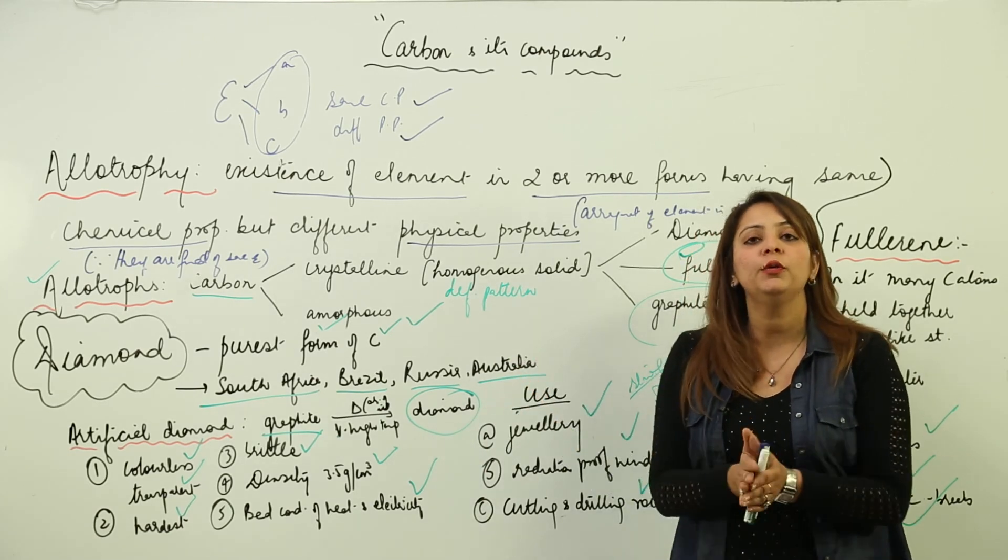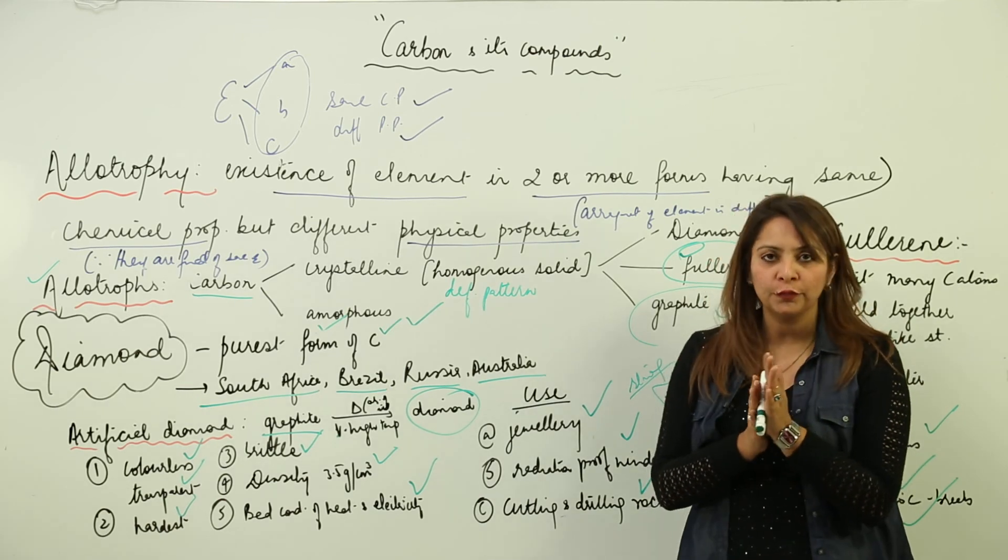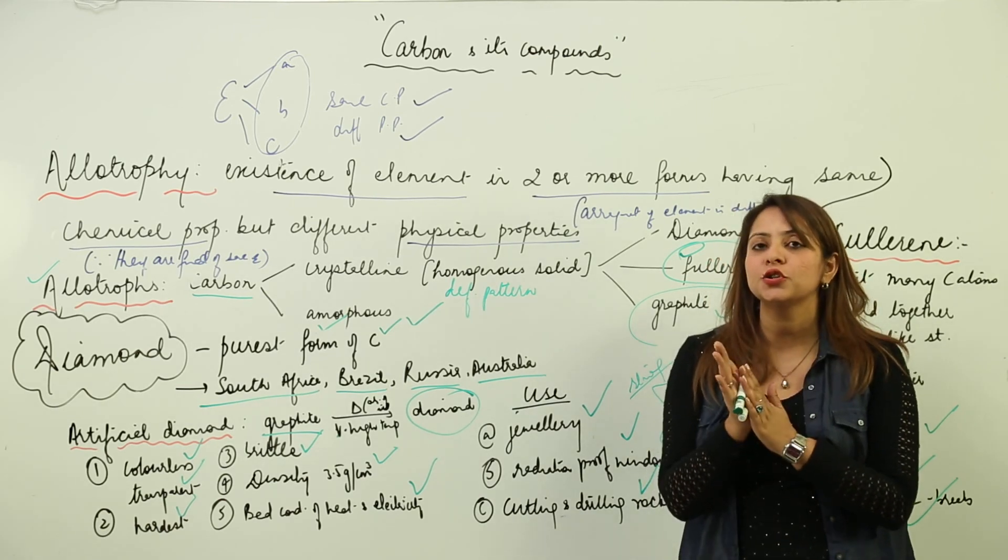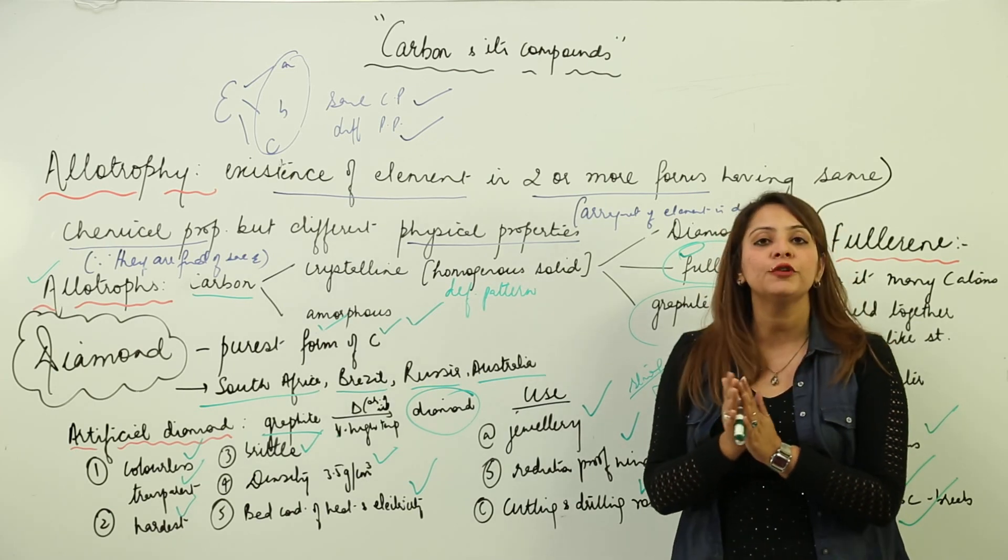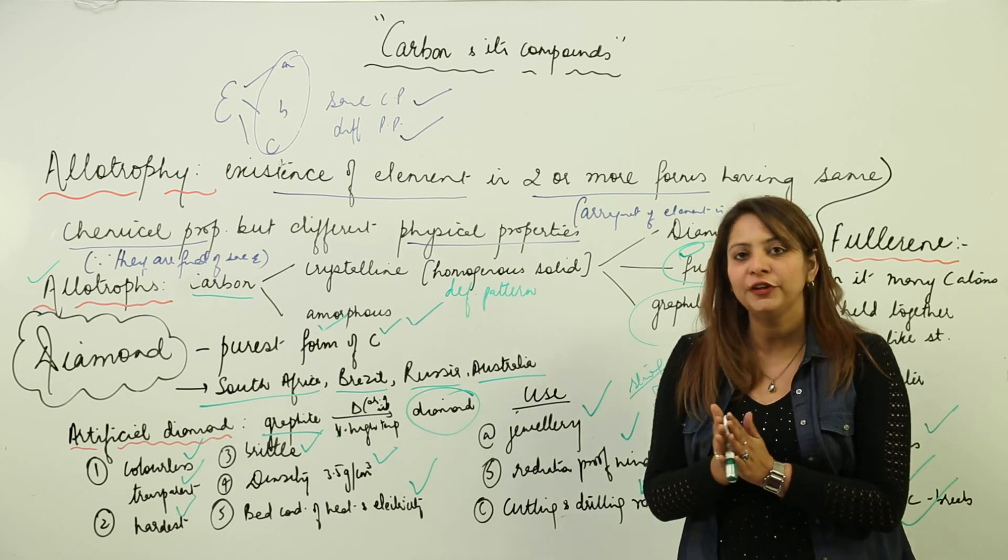This is about the crystalline allotropic forms of carbon, where you can see that they are homogeneous with a regular pattern. Now we are going to study about the amorphous form, where there is no such regular pattern. We are going to look at the amorphous allotropes of carbon.